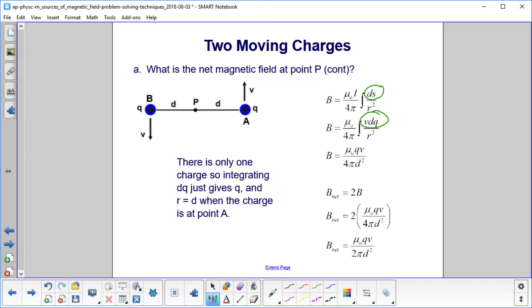And then what do we do? Well, V is constant. So we take V outside. R is constant, right? Because at this point, remember, we want to find it right at this point. R is equal to d.